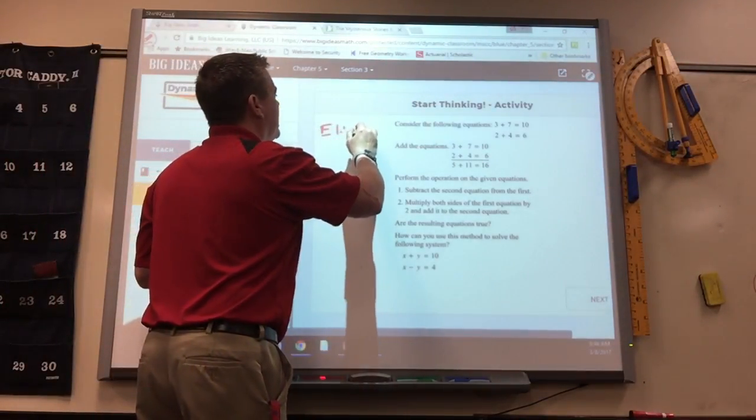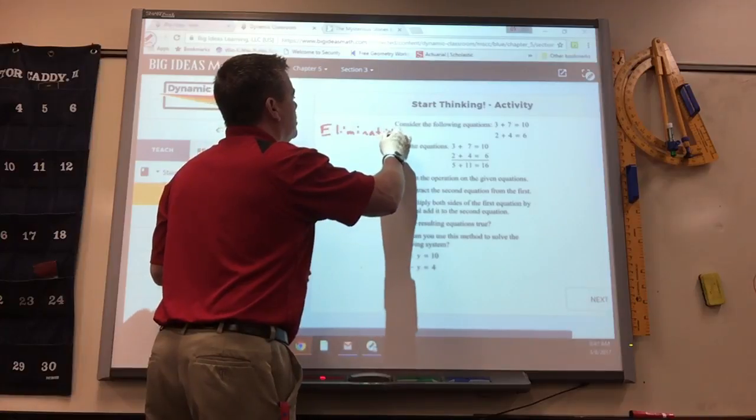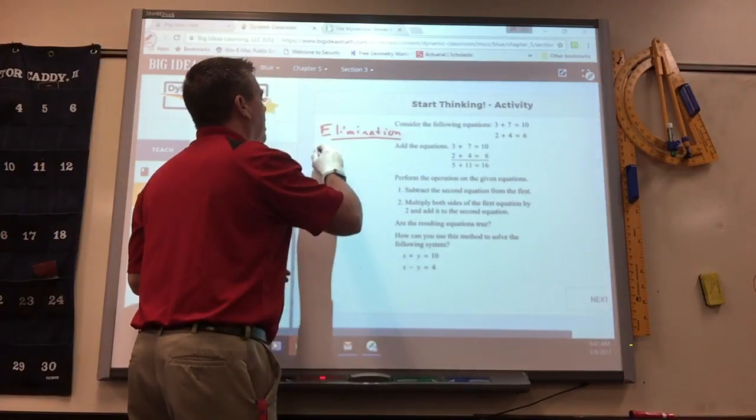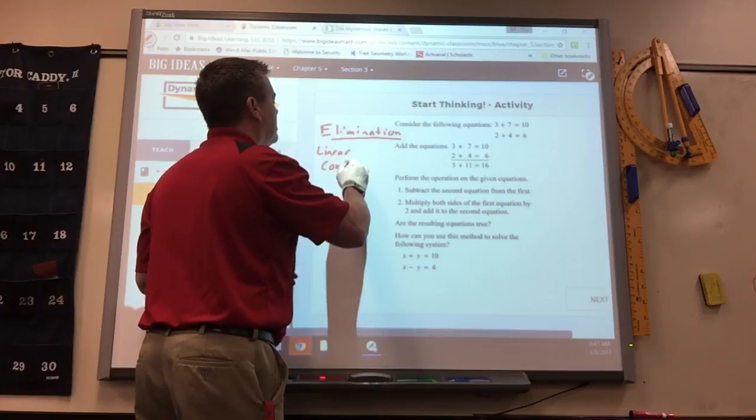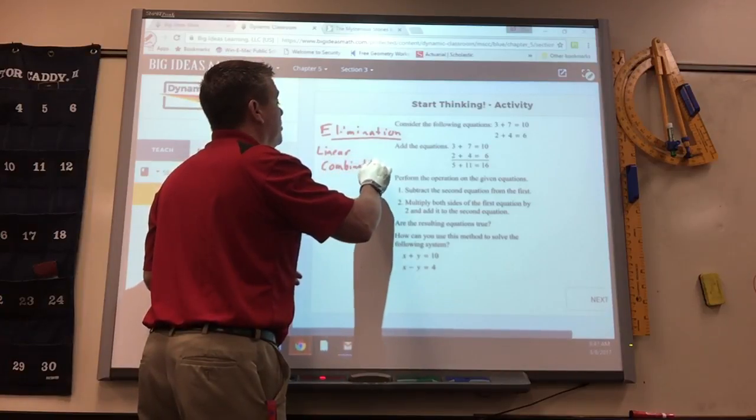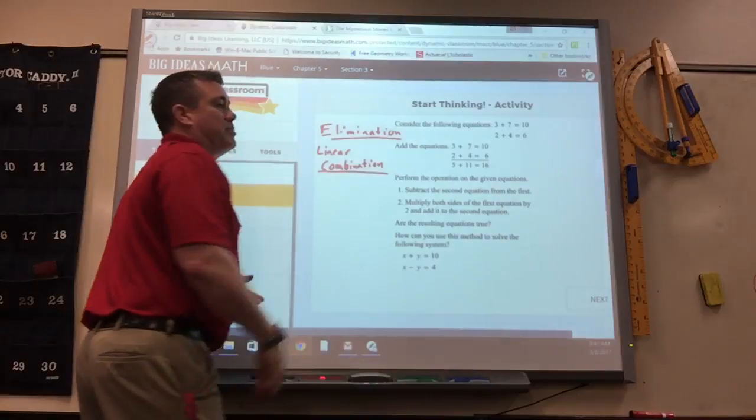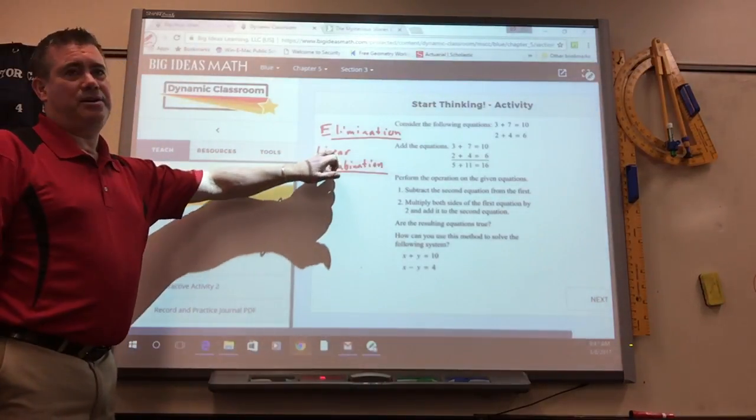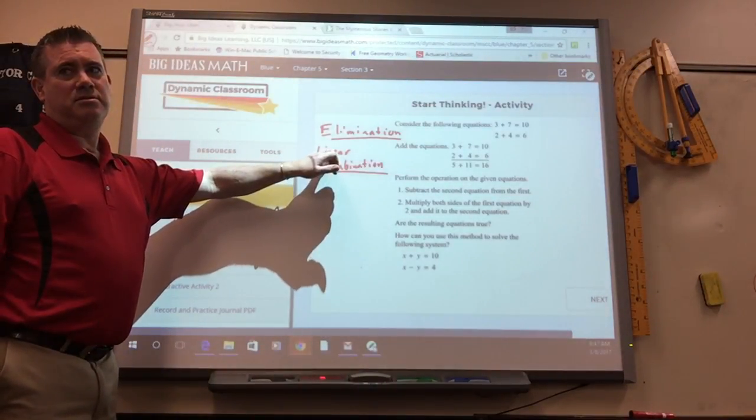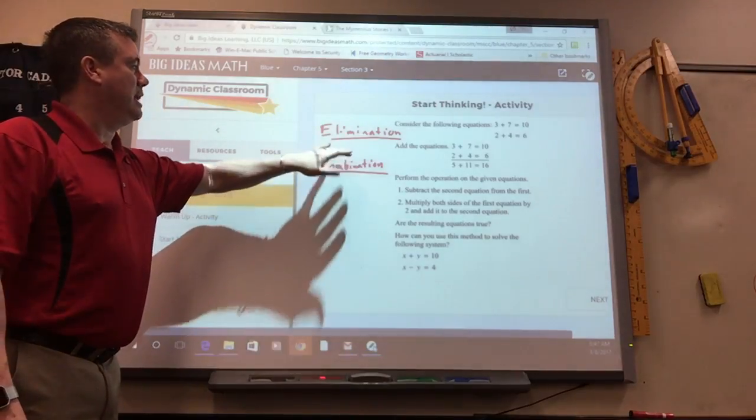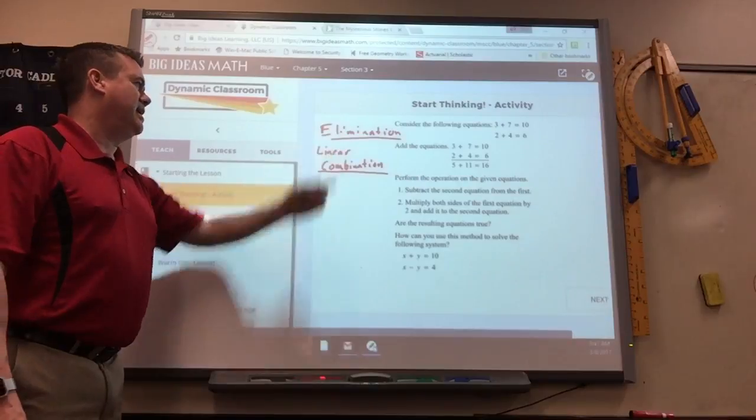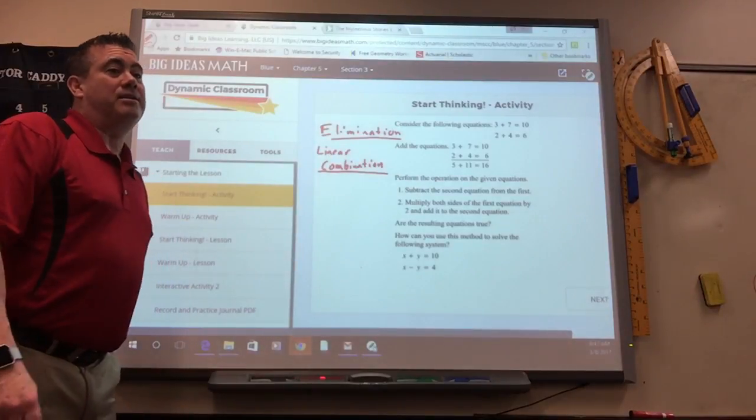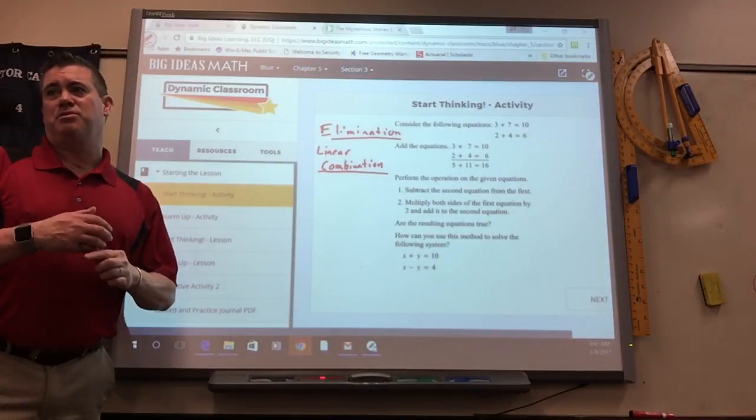Some books call it elimination, which describes it better. Other books call it linear combination. They mean the same thing. Remember what linear means? Straight lines. So linear means there's no exponents in it. This is the easiest way to solve systems of equations.